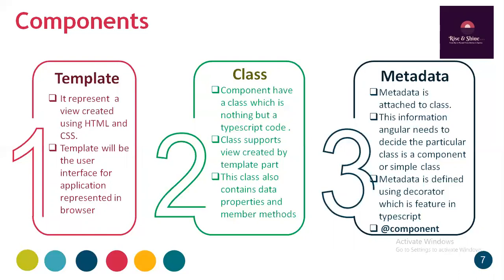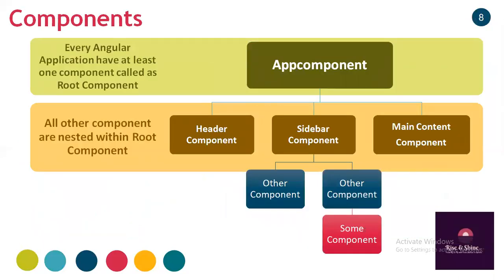To summarize so far: a component has three parts — first is the template, which is the HTML and CSS user interface; second is a TypeScript class that supports the template; and third is metadata. Metadata is attached to the component class, and it is used by Angular to decide whether a particular class is a component, a simple class, or a service. This metadata is defined using a decorator, which is a feature of TypeScript — specifically the component decorator using @Component.